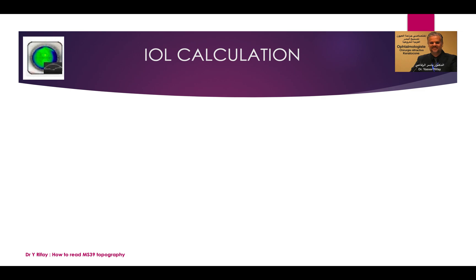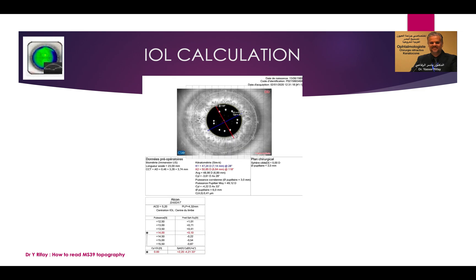You can also use this device for IOL calculations. You provide the axial lens length, choose the lens you want, and the device will give you the biometry without requiring you to choose any formula. The device calculates data from the cornea and determines whether the cornea is ablated or not, whether it is a virgin cornea or a keratoconic cornea, and does all this work for you without needing to select any formula.